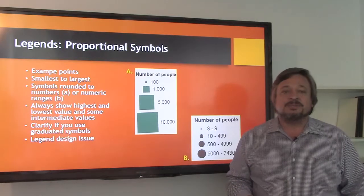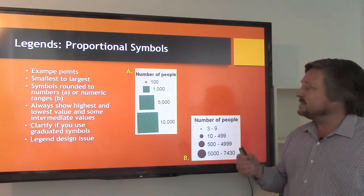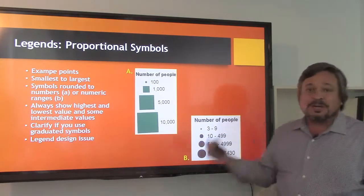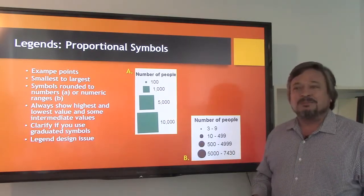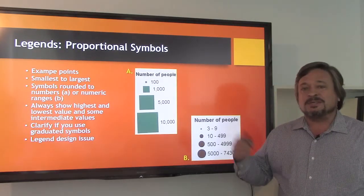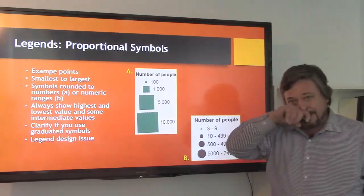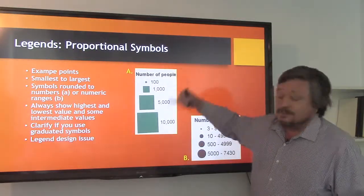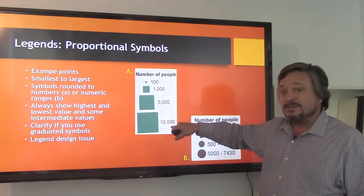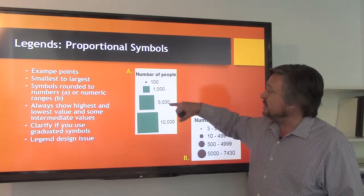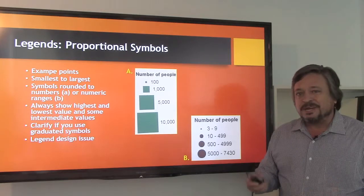Legends with proportional symbols — we can think of different examples of how the form of the symbol itself can vary in size: by square, by circle, by triangle. We can make them look flat and two-dimensional, or like on the Seattle map, they can be round and more three-dimensional in shape. We're usually thinking of smallest to largest, with the smallest at one end and the largest at the other end of the legend. We always want to show the highest and lowest value in the data range, but we need to have at least one or two in-between values, so we can get a feel for what the different types of variation look like on a map.